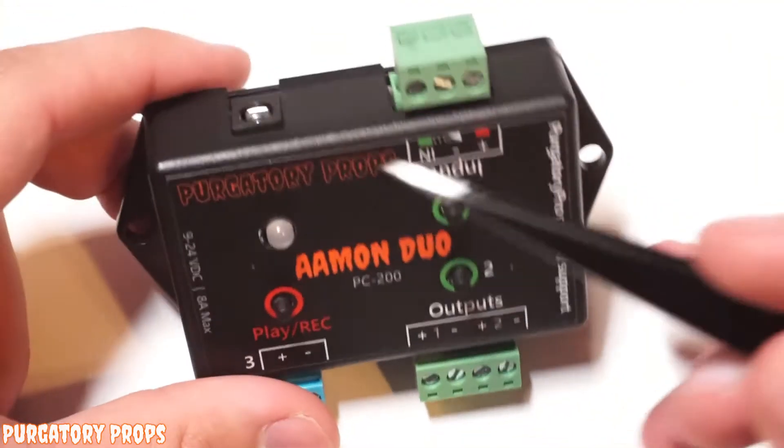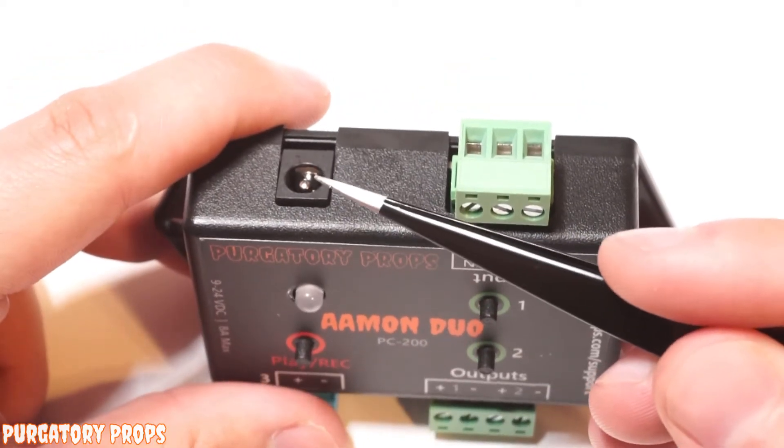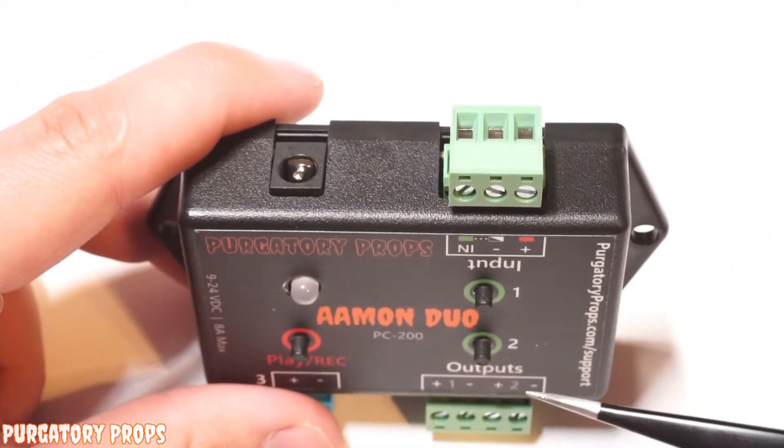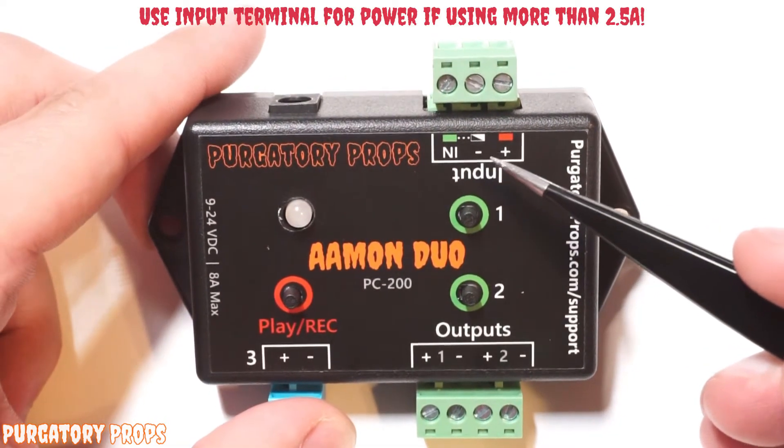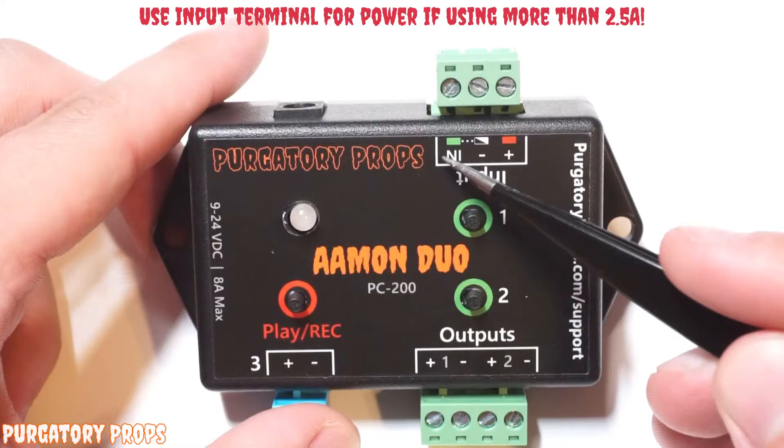The Amon Duo is very simple to use. On this side, we have a DC jack for power and then your input screw terminals. Those have a positive and negative, which could also be used for power, and then an input.